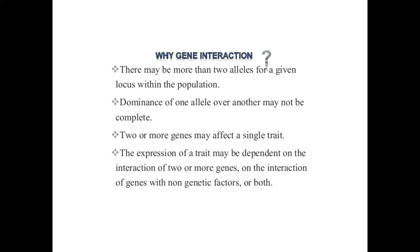Why are we learning about gene interaction? There may be more than two types of alleles for a given locus within the population. We have already read that there are two types present for a particular character — one is tall, one is short, one is wrinkled, one is smooth — as discussed in Mendel's law. Now we will be dealing with something different from Mendel's law, because interaction is taking place when there are two or more alleles for a particular population.